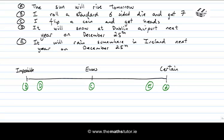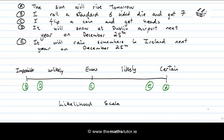Events in between impossible and evens we would call unlikely, and events in between evens and certain we would call likely. This is what we call the likelihood scale — an informal way of classifying the likelihood of various different events.